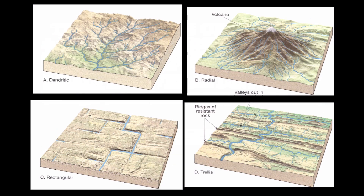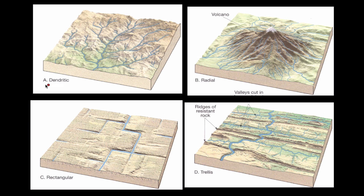Here are four major types of drainage patterns. You can see the names right underneath — these are definitely diagrams I would try to get down. We have dendritic, radial, rectangular, and trellis. These are the four major types of stream drainage patterns that we typically see.